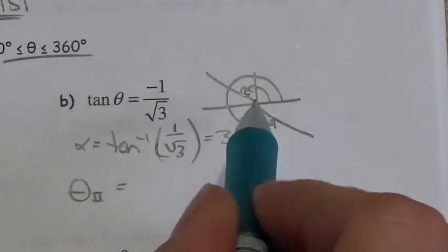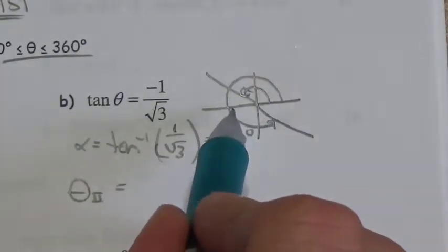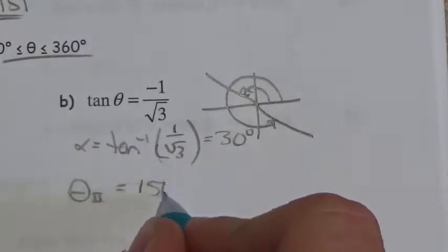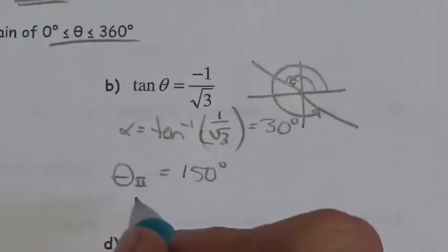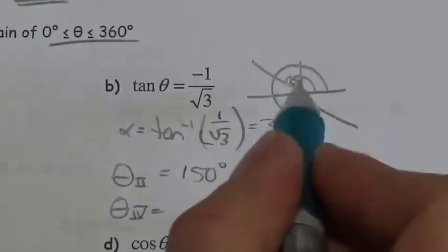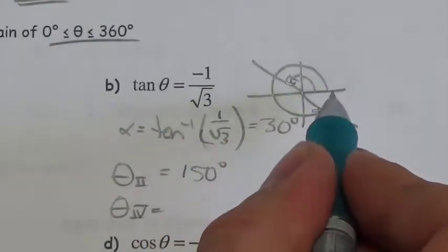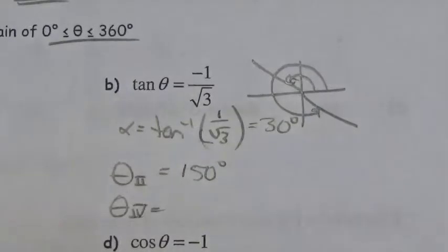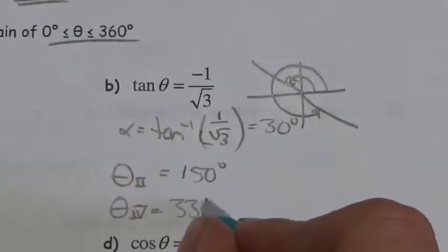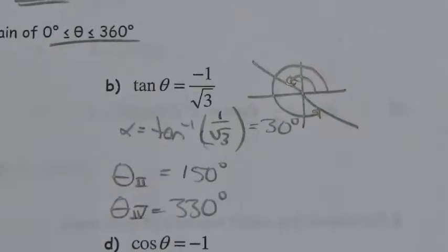In quadrant 2, that's 180 minus 30, giving 150 degrees. In quadrant 4, I almost wrap all the way around to 360 but come back 30 degrees, giving 330 degrees. Those are the two solutions.